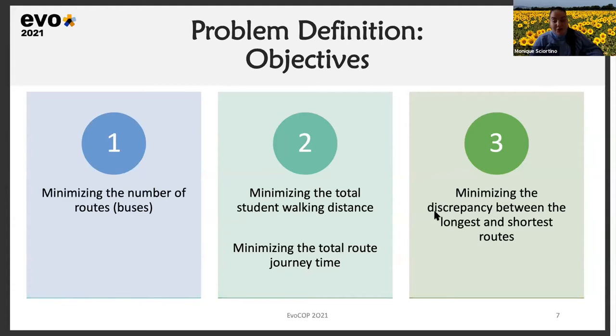For example, if we find two alternative solutions that have the same total route journey time, then we choose the one that has the lowest discrepancy between the longest and the shortest routes.